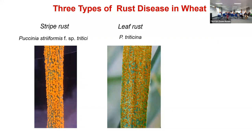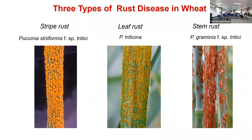The second is leaf rust, caused by Puccinia triticina, which produces round to oval-shaped reddish pustules. Leaf rust is very common — wherever wheat is grown you can see it. The third is stem rust, caused by Puccinia graminis tritici. As the name indicates, this fungus grows only on the stem and appears late in the season, close to the harvesting stage.